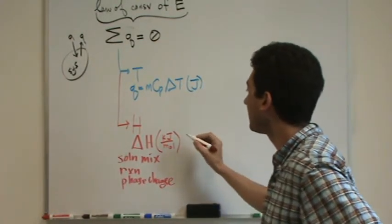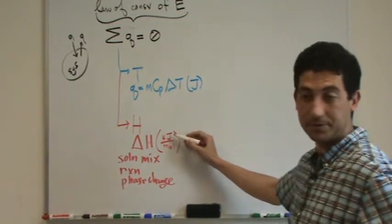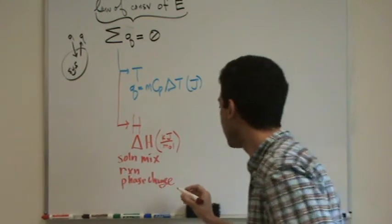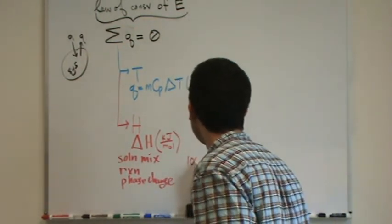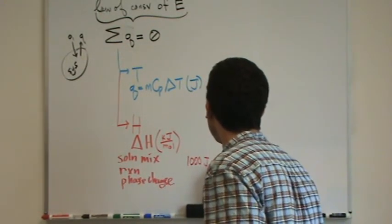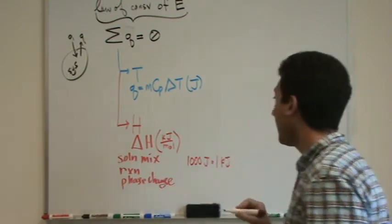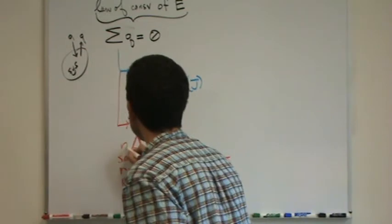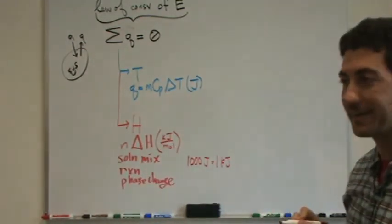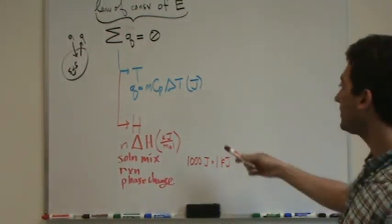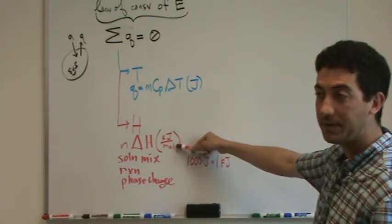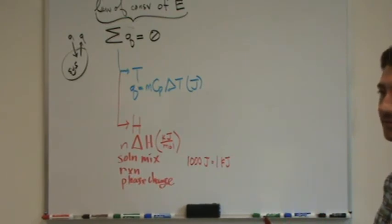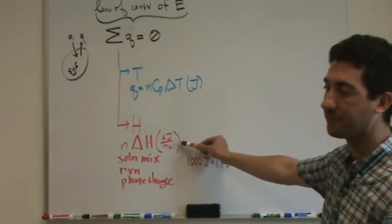So you'd have to convert this to joules using that 1,000 joules for every 1 kilojoule. So you'd probably have to use a conversion. I'll write that right here. And you've got to get rid of those moles. So how do you get rid of moles? You just multiply by moles. Sometimes this is in kilojoules per gram, so you've got to multiply by mass unit. Whatever it is, you've got to convert it to joules. Almost always, you'll have to convert this somehow.